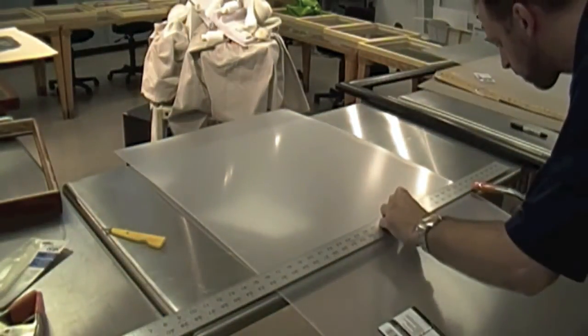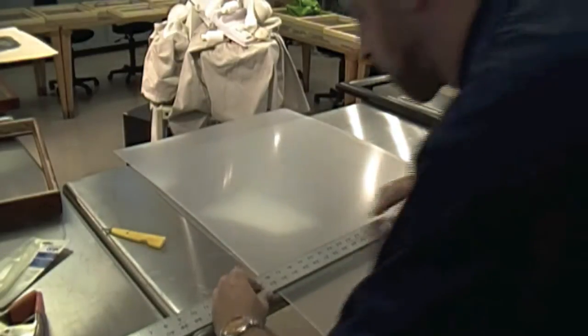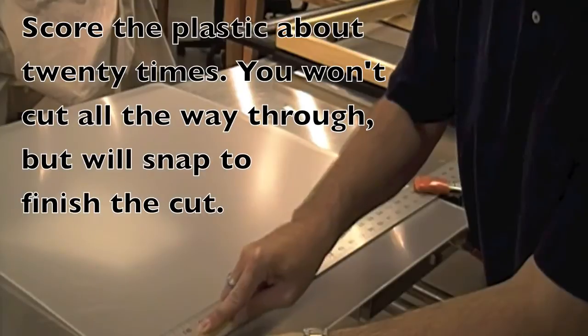You then want to clamp a metal straight edge onto it. You don't need to draw a line all the way across. You can just have two points on there that line up to make a straight line. Clamp it down.